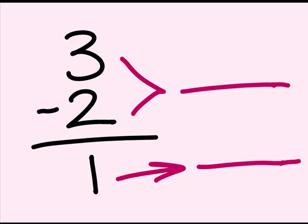3 minus 2 equals 1. In this problem, the 3 and the 2 are the terms and the 1 is the difference. The difference is the answer to a subtraction problem.